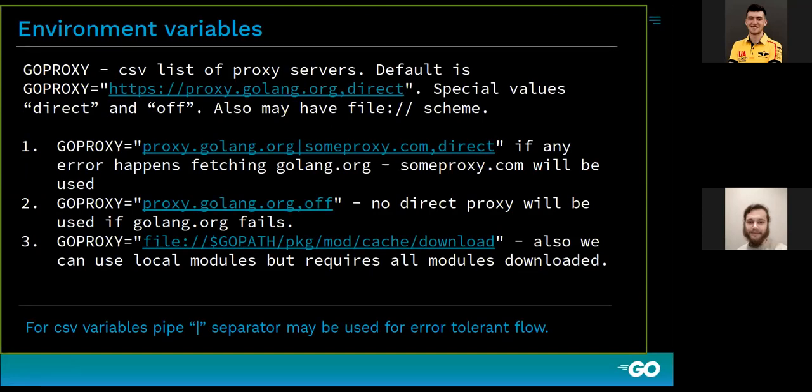How do we work with the configuration of GOPROXY? How can we understand where the server is located? GOPROXY usage is configured through a set of environment variables. There are variables related to some database, to privacy-related stuff, but we will cover only a couple — GOPROXY and GONOPROXY — as they are the most important.